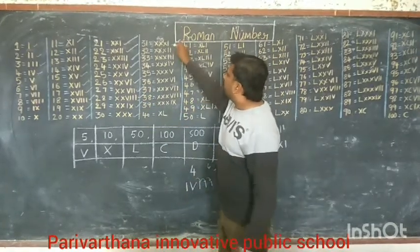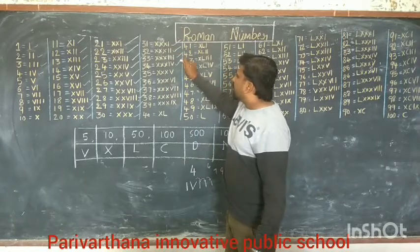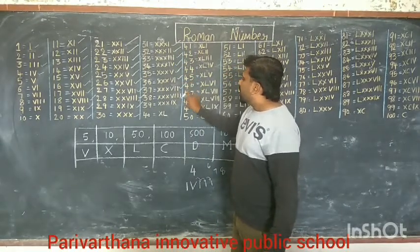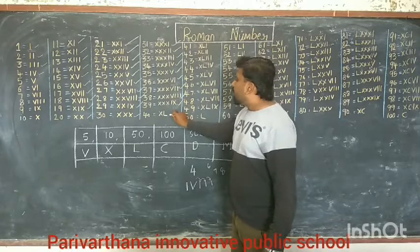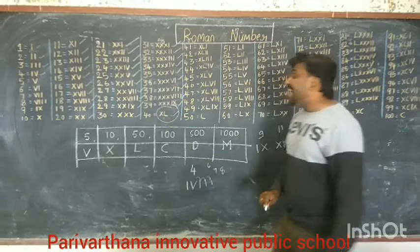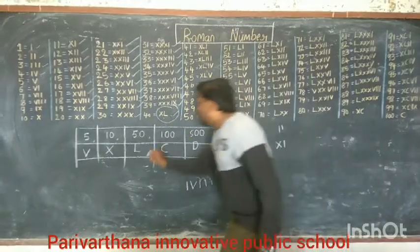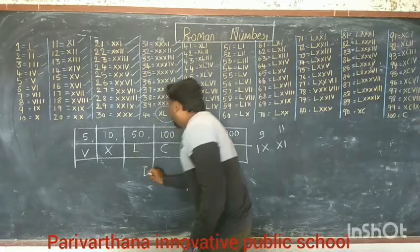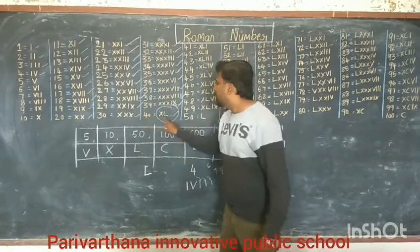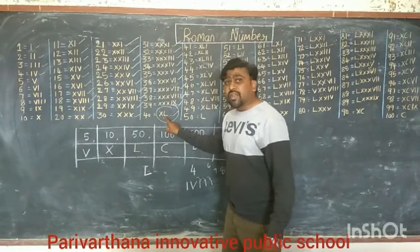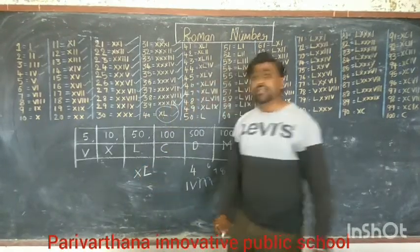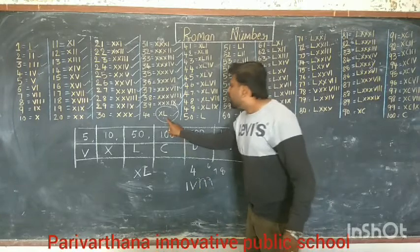After 30: 31, 32, 33, 34, 35, 36, 37, 38, 39, 40. See here — in 40, we are writing XL. L means 50. To write 40, we have to subtract 10. So 50 minus X (10) becomes 40.